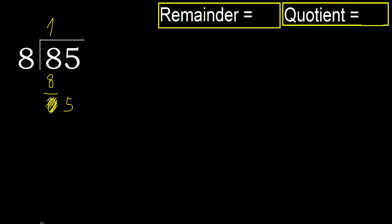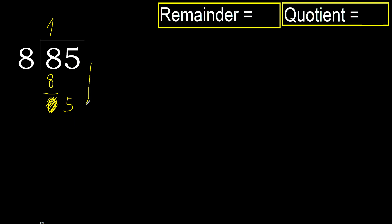Bring down the next digit. 5 is less, therefore bring down next. There is no more number, so finish it here — always complete with 0. Complete with 0 because we finish it with this number.